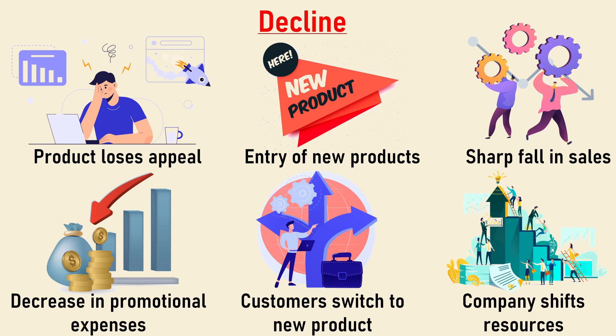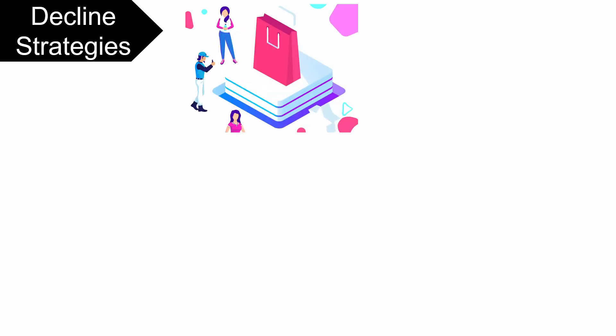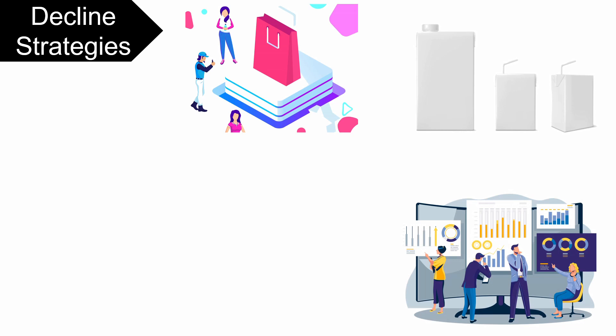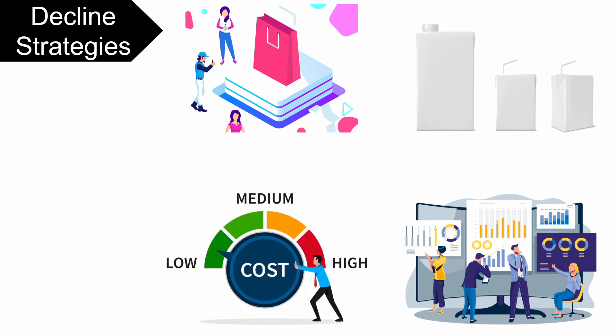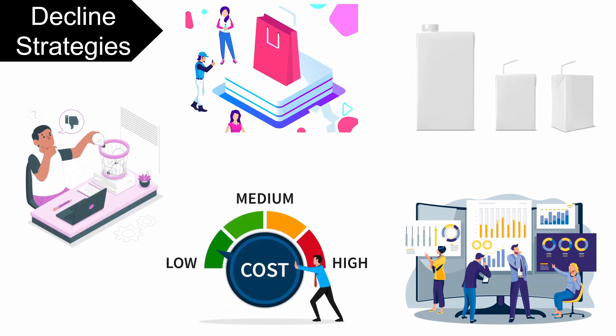At the decline stage there are a number of strategies which companies implement. These include improvement in the packaging and design of the product to make it more attractive, introduction of economy packs for reviving the market, effective production and marketing programs, cost control, and abandoning the product.